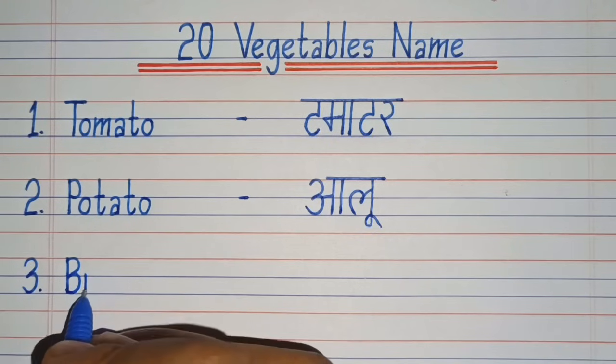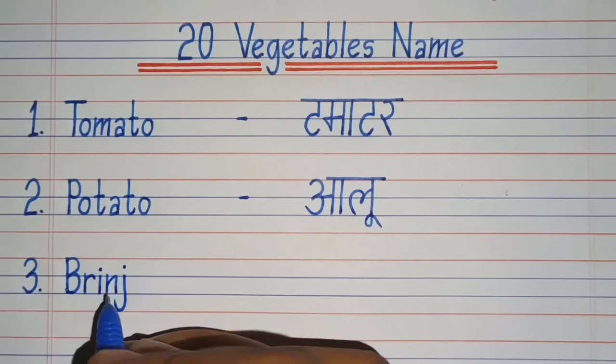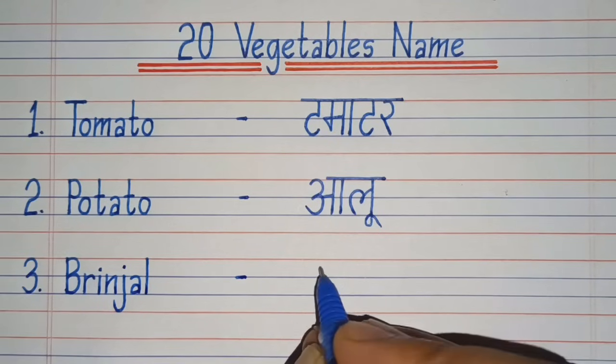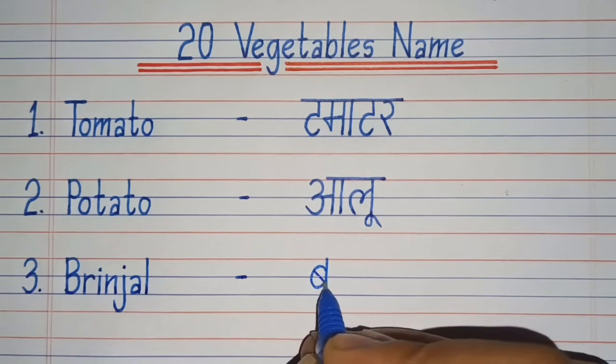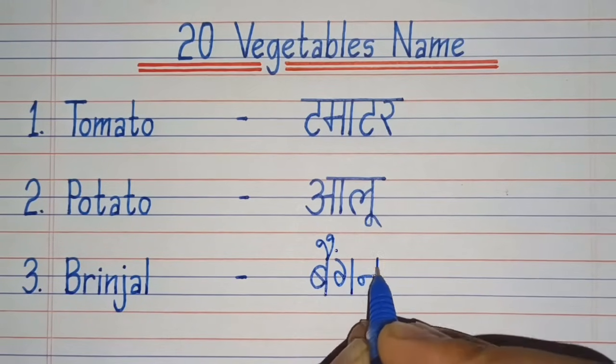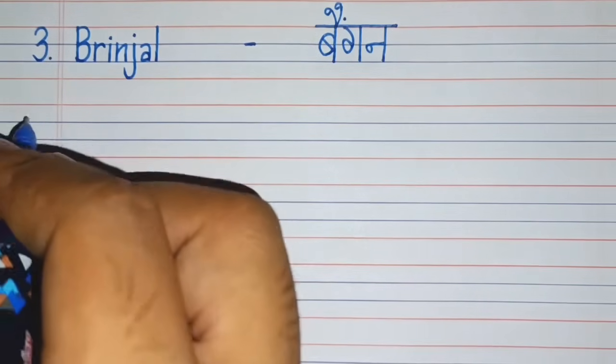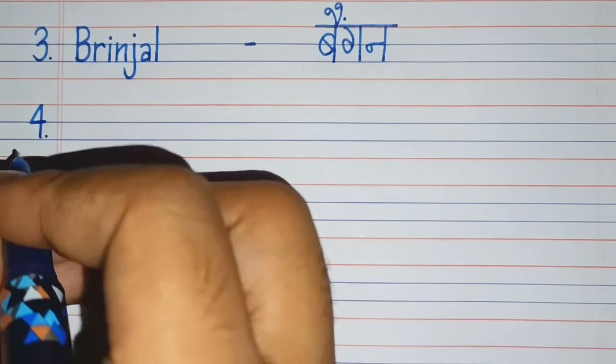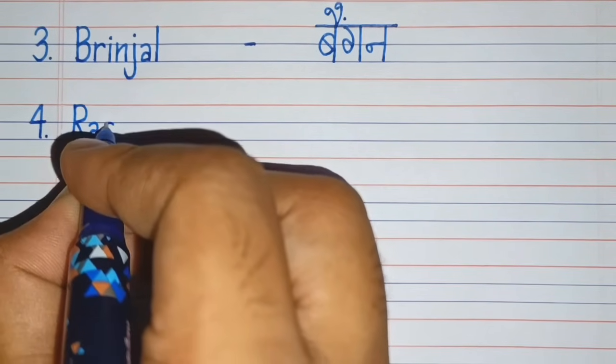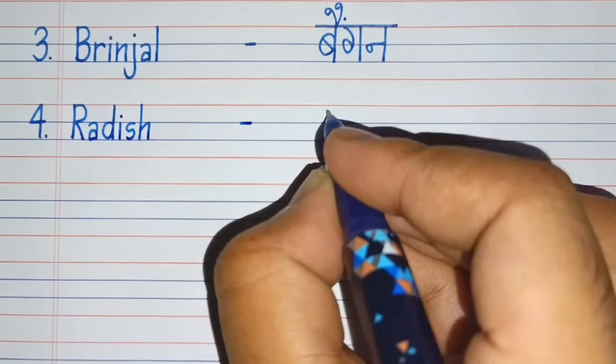B-R-I-N-J-A-L, Brinjal. Brinjal means Baingan. Fourth number. R-A-D-I-S-H, Radish.